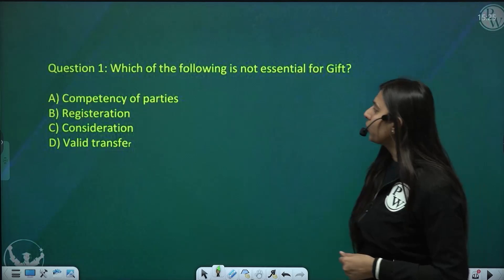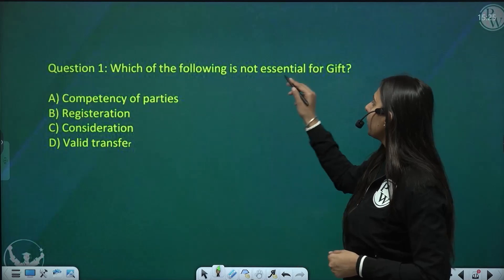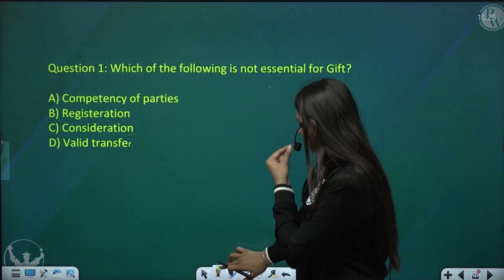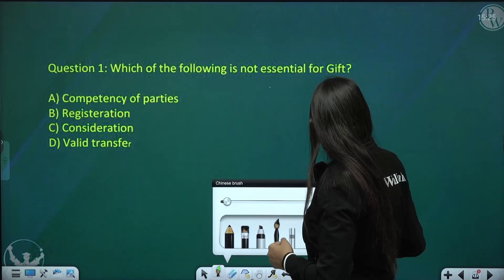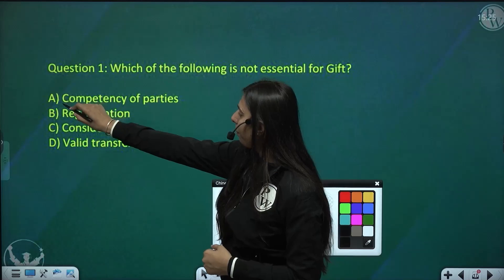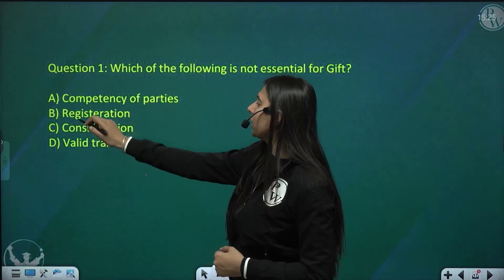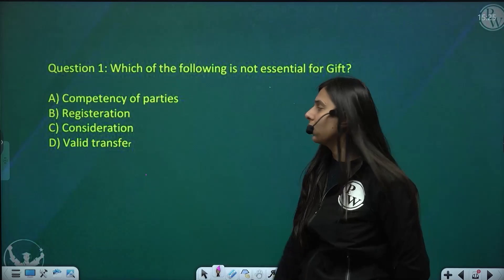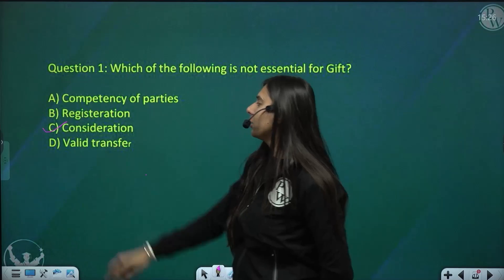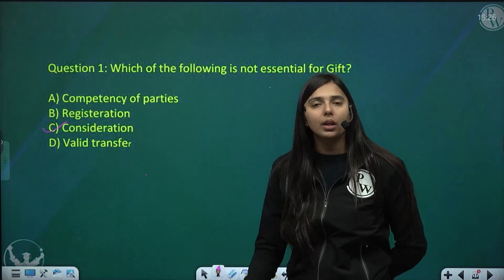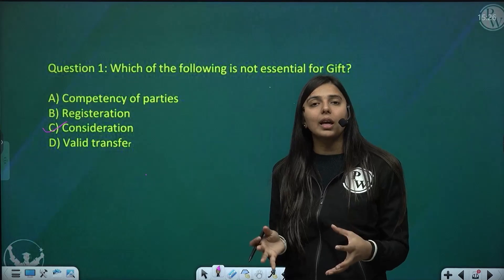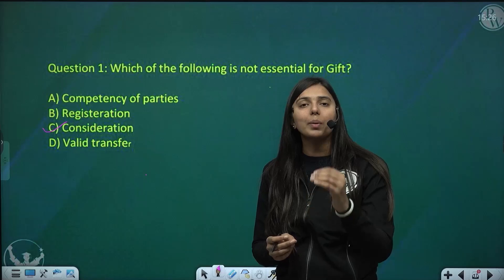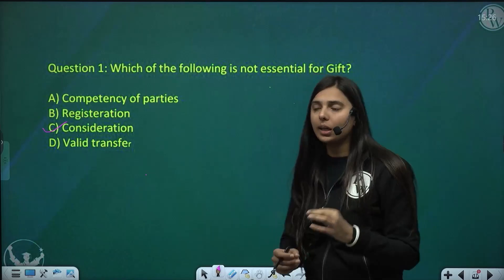Now let us discuss questions and answers. First question: which one of the following is not essential for gift? Options are: (A) competency of parties, (B) registration, (C) consideration, and (D) valid transfer. The answer is (C) consideration — consideration is not required for gift, as I have already discussed.